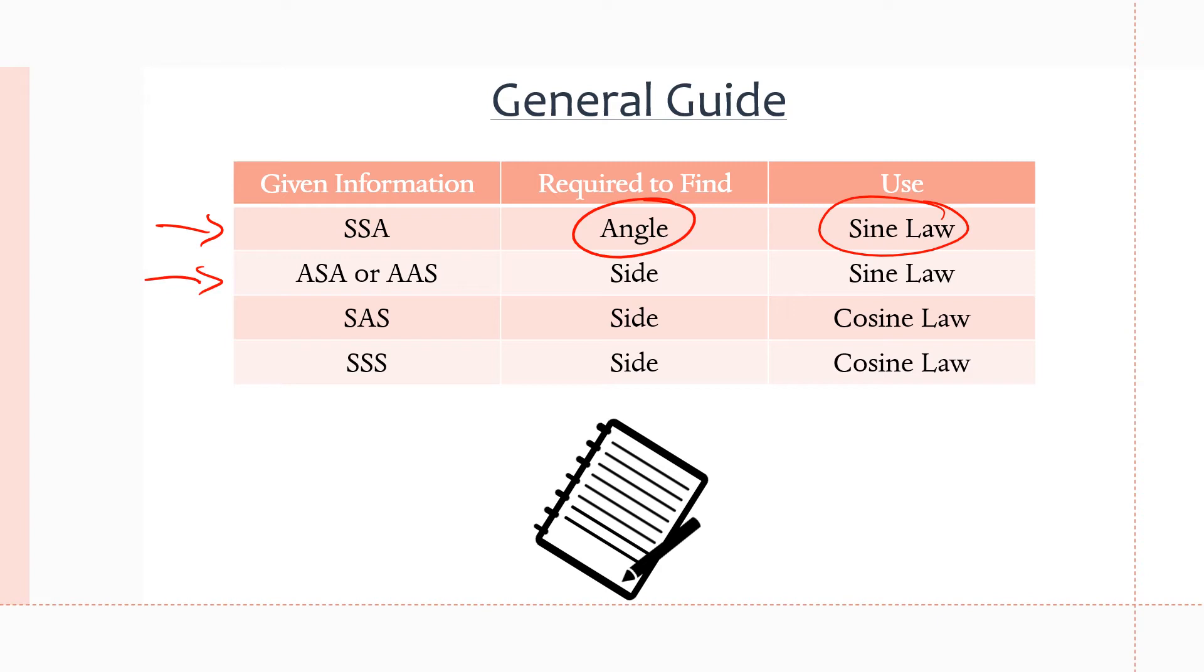Now, if we're given an angle-side-angle triangle, or an angle-angle-side triangle, so we're given angle A, then a side B, and also angle C or angle B, as it says right here, and it's asking us to solve for a side, let's say side A, for this particular scenario, angle-side-angle or angle-angle-side, we want to use the sine law to solve for the side.